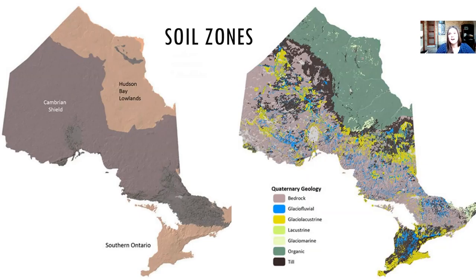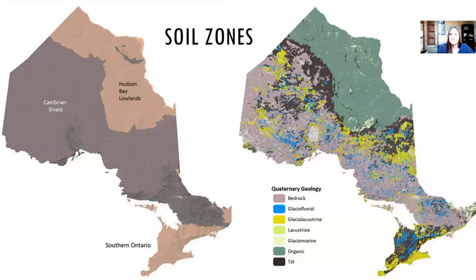We'll start at a thousand-foot level and work our way down. Soil zones in Ontario are drastically different, especially around Lake Huron. In Southern Ontario we have a very erodible shoreline with glacial till — clay, silt, and sand left over from the glaciers. As you move up into the Canadian Shield, we get into bedrock substrate and more organic substrates that are conducive to coastal wetlands.